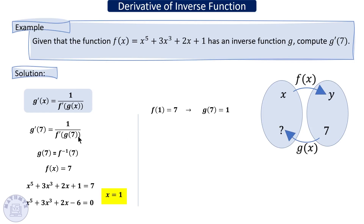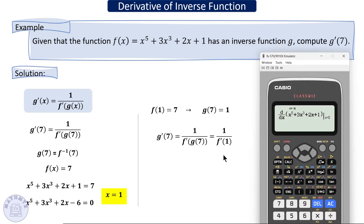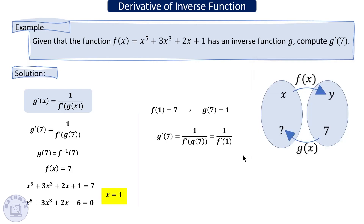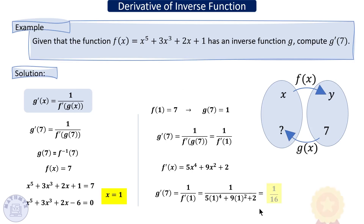Substituting back into the formula, we need f prime of one. Using the calculator or taking the derivative of the polynomial and substituting x equals one gives 16. Therefore g prime of seven equals one over 16. You can verify by computing the derivative manually and substituting one to confirm the same result.